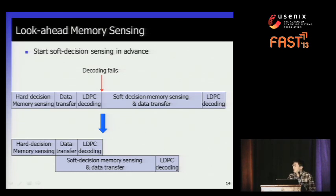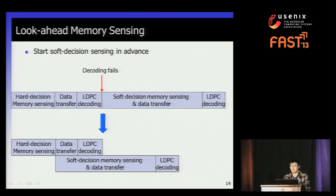The first technique is look-ahead sensing. In the two-step method, we start soft sensing after the LDPC decoder in the SSD controller reports an error — that is, we wait for hard decision decoding to fail before starting soft decoding. But actually, we don't have to wait that long. We could start the soft sensing immediately after the hard sensing finishes, thus overlapping the two operations and saving time.